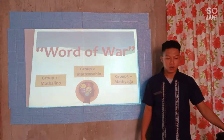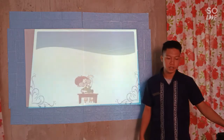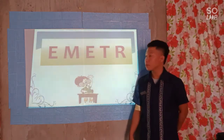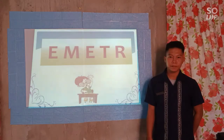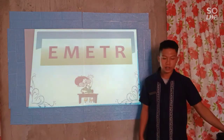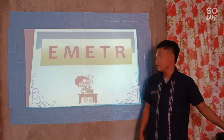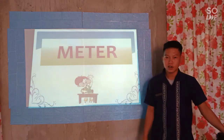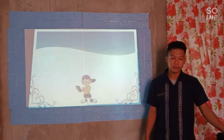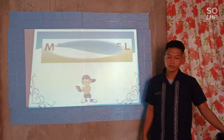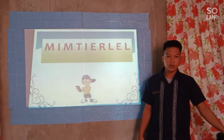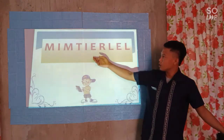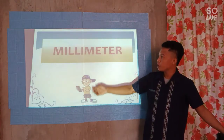Are you ready? Shall we start? First jumble word — group one. Very good, the first jumble word is meter. Next — group three. The next jumble word is millimeter.